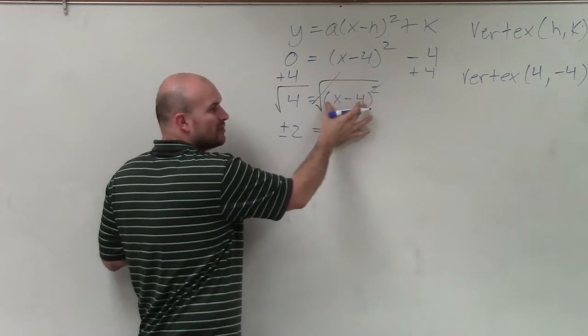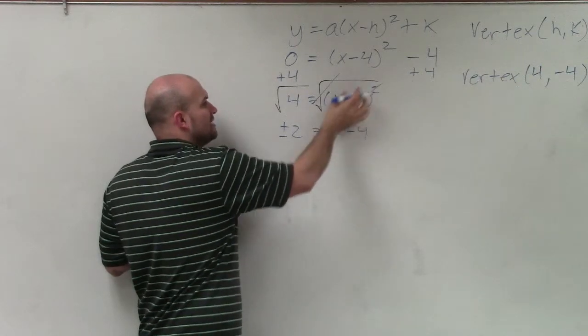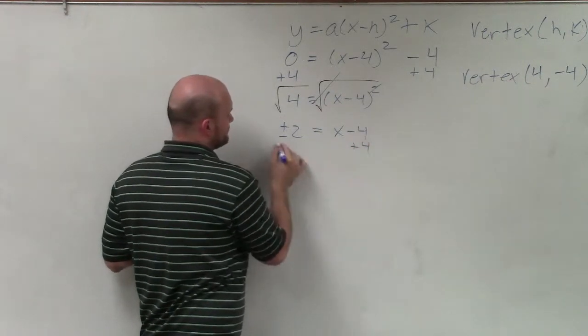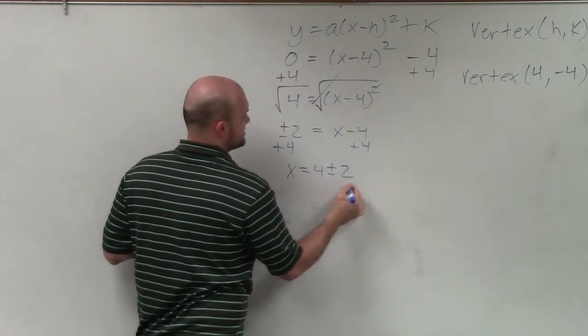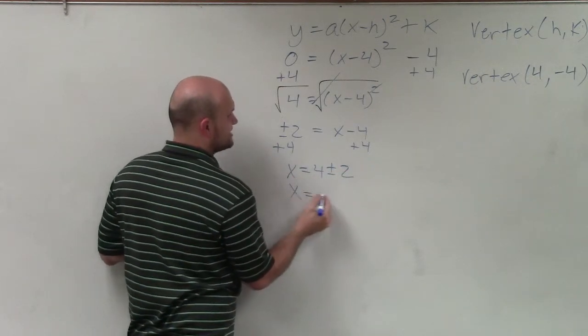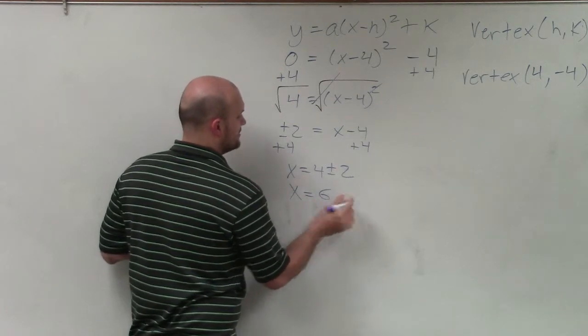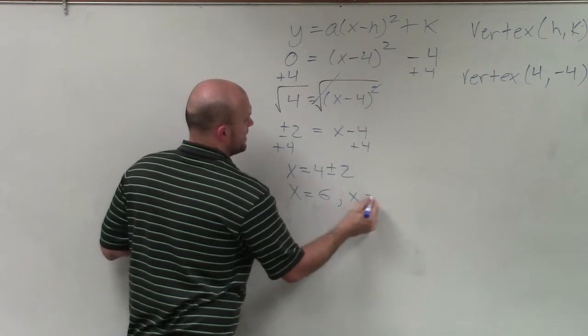I don't need to continue the parentheses. That was just to make sure I understood that it was x minus 4 squared. So now I just add 4. So x equals 4 plus or minus 2. I can simplify that to x equals 6, x equals 2.